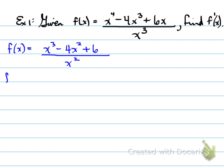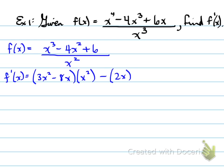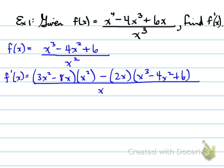In the meantime, taking the derivative of f(x): we take the derivative of the first, which is 3x squared minus 8x, times the second — which is the denominator — minus the second derivative times the first, which is the top, all divided by the denominator squared, which is x to the power of 4.